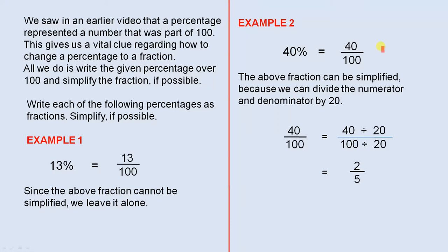Example 2: 40% is 40 per 100, which is 40 out of 100. The above fraction can be simplified because we can divide the numerator and denominator by 20. So 40 over 100 equals 40 divided by 20 over 100 divided by 20. 40 divided by 20 is 2, 100 divided by 20 is 5, so 40 over 100 is 2 over 5.